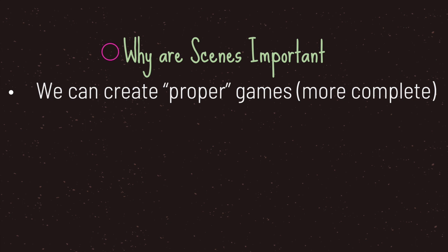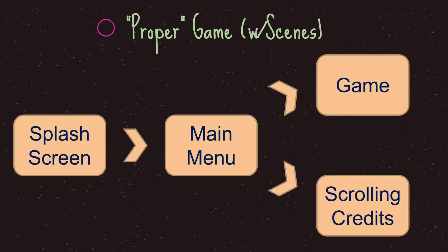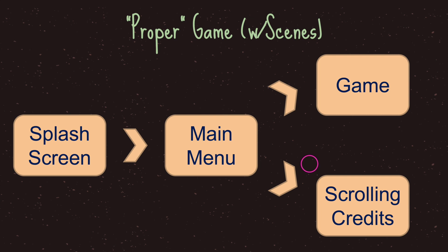So why are scenes important? We can create proper games using scenes for structure. For example, a game might have a splash screen with your company image, then a main menu scene with buttons giving the player choices, a game scene, and a scrolling credits scene. Think of a game like Mario — when you press play you enter the world, pick your level from a level-picker scene, and then enter the level itself as another scene. That's how we can use scenes to create games.